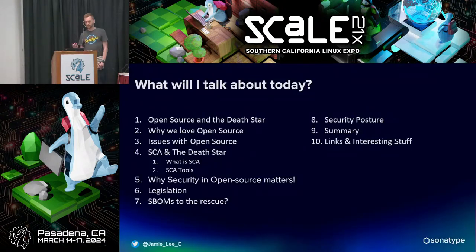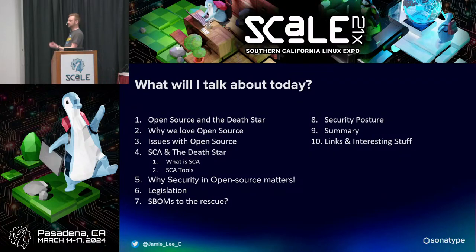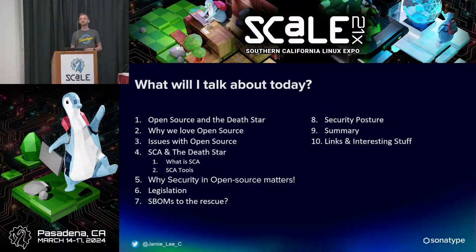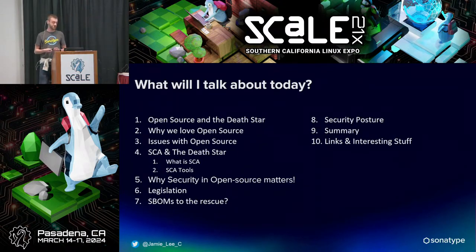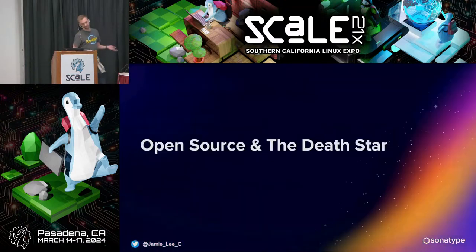So why this topic? I want to talk about the similarities between the decisions the Empire made with the Death Star and what we do with software development, why we love open source code, some of the issues with the mass consumption we have today, what SCA is, why security matters in open source, some of the legislation, a little bit about SBOMs, how to make small improvements to your security posture, and then some interesting stuff at the end.